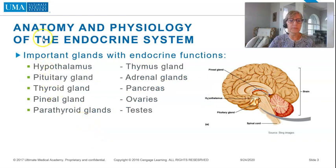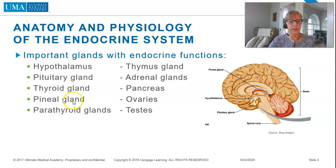The anatomy and physiology of the endocrine system — the important glands with endocrine functions include the hypothalamus, pituitary gland, thyroid gland, pineal gland, parathyroid glands, thymus gland, adrenal glands, pancreas, ovaries, and testes.